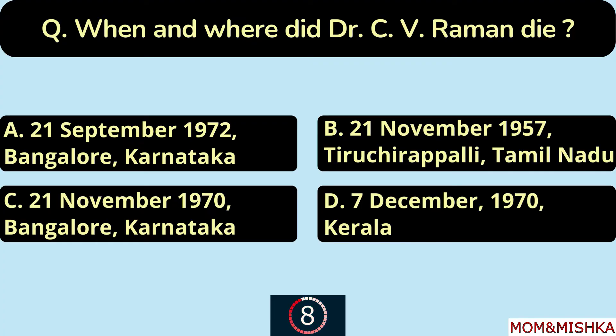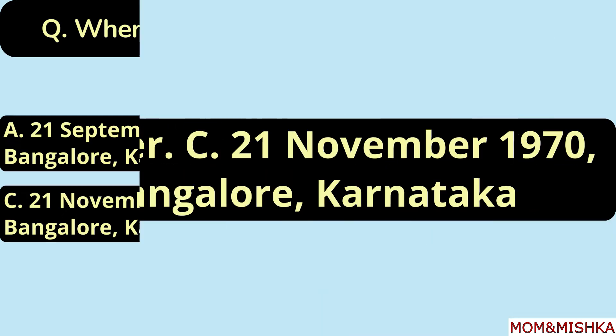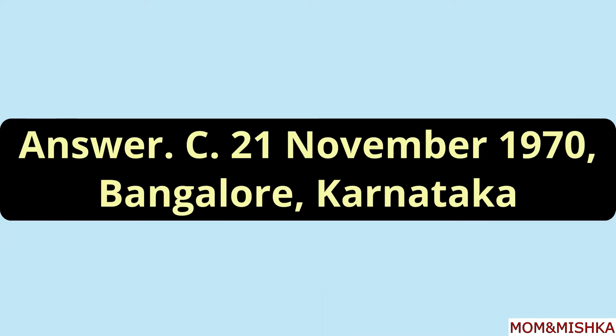When and where did Dr. C. V. Raman die? Option C: On 21st November 1970 in Bangalore, Karnataka.